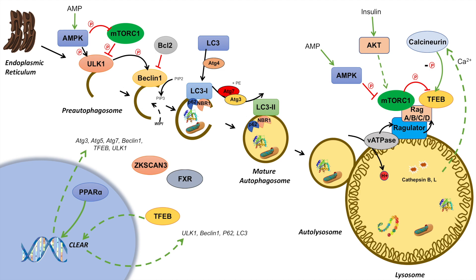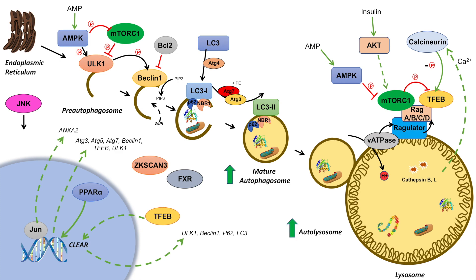There is another transcriptional regulator involving a JNK–Jun axis. During starvation, JNK becomes activated and activates the transcription factor Jun. Jun then translocates into the nucleus and induces the expression of a protein known as ANXA2. ANXA2 is important for vesicular trafficking and increases autophagic trafficking, increasing the trafficking of many autophagosomal processes in macroautophagy.